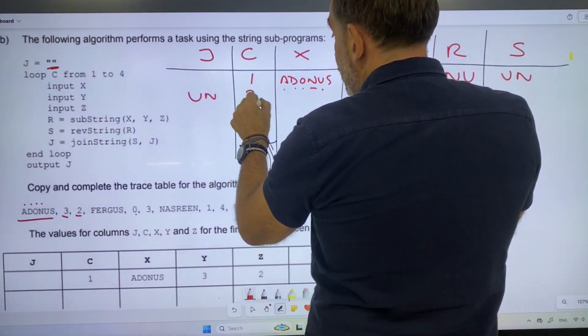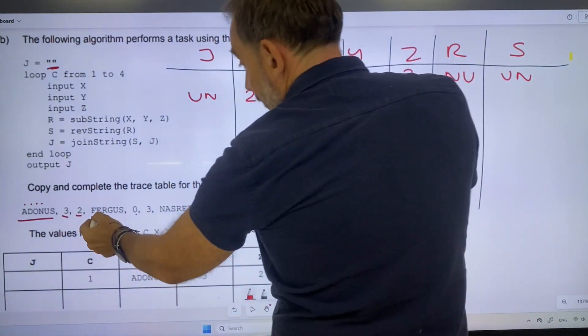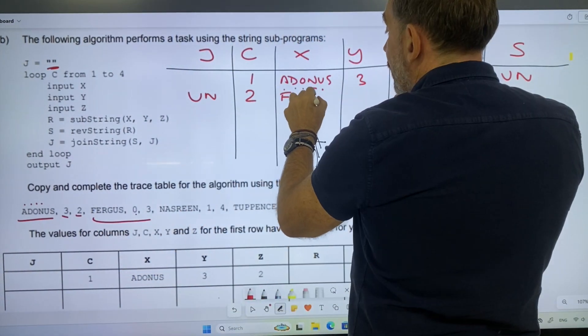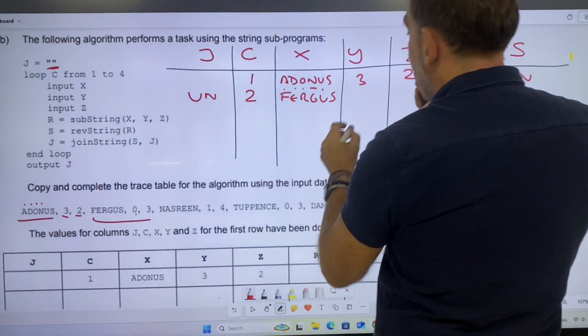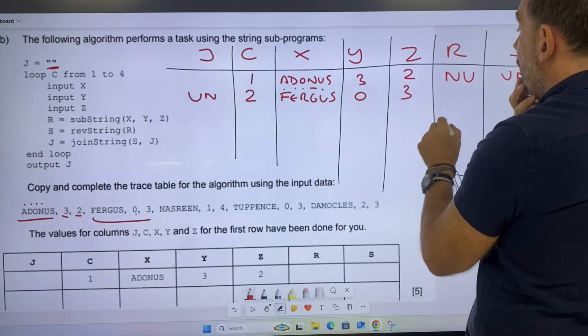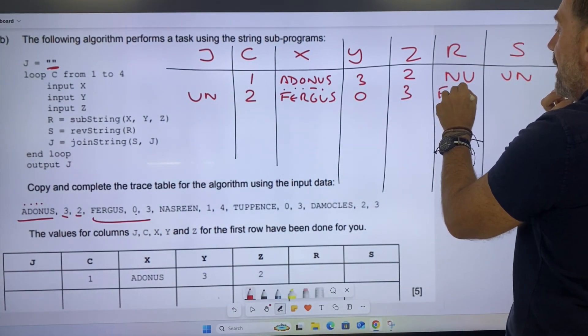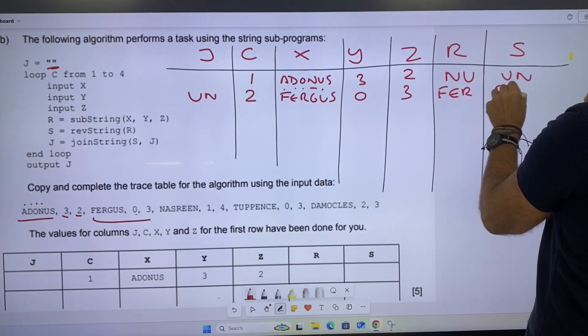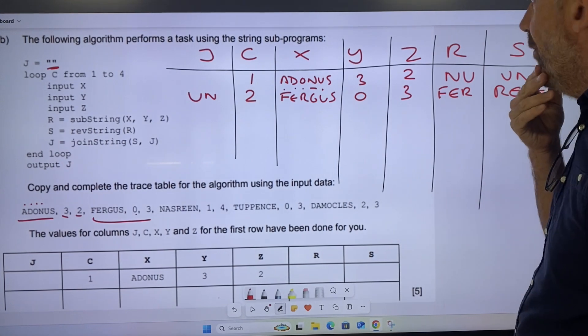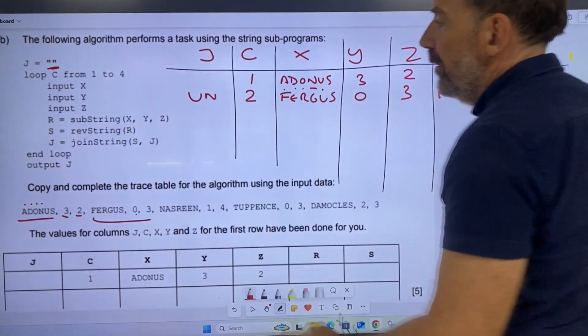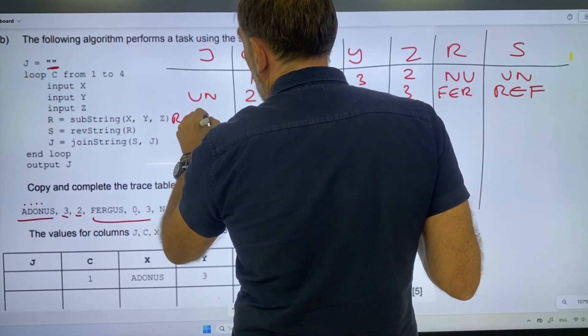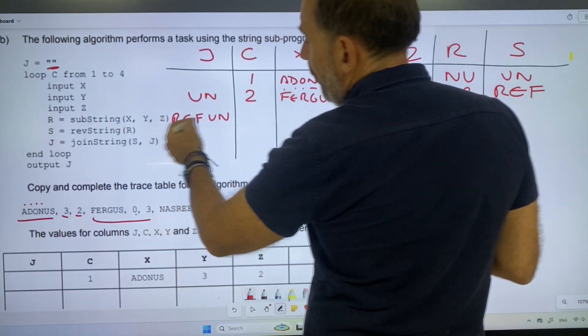Move on to the second one, 2, which is Fergus. Fergus starts at 0, so we'll take the f. Three values, so f, e, r, which when we reverse it would be r, e, f, something fun, methinks. If we add that to that, ref un, something fun.